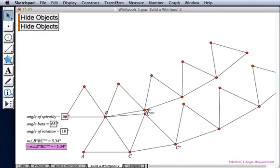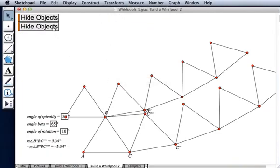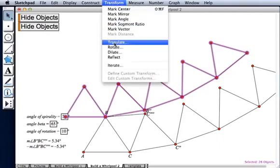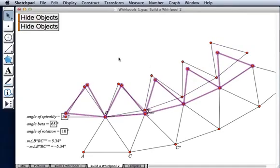So now I'm going to mark that angle. And use this Hide Show button to select my triangles that I want to rotate. Choose Transform Rotate. And press Rotate. Okay.